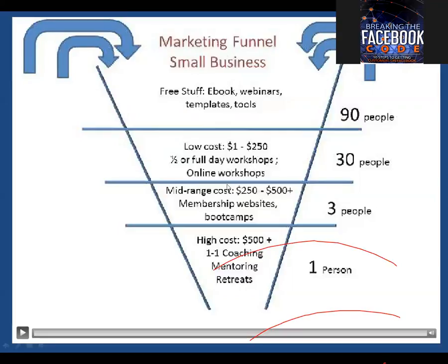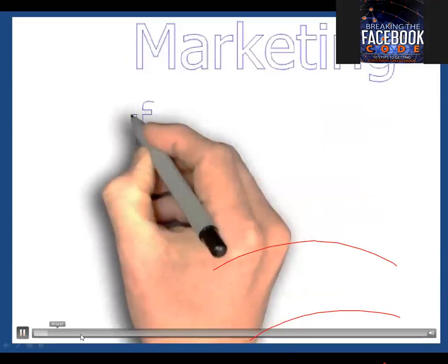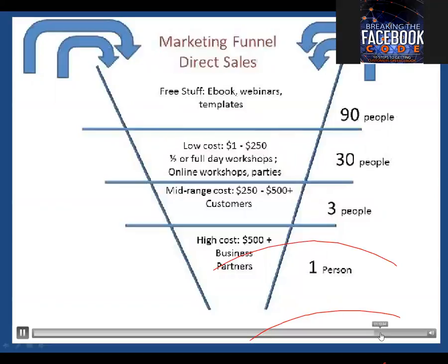Mid-range cost — $250 to $500 plus — covers membership websites and boot camps. Out of those 30 people, you'll get around three. Then the high cost, $500 plus, covers one-on-one coaching, mentoring, and retreats. Out of the original 90 people, you'll filter down to one person at that level. That's the funnel on average. Now let's look at the direct sales version.